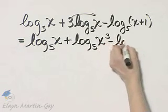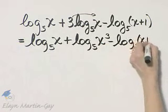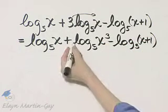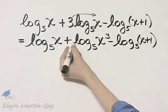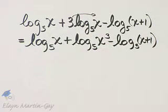Minus log base 5 of x plus 1. So don't forget, first get rid of coefficients by moving them in the exponent position.